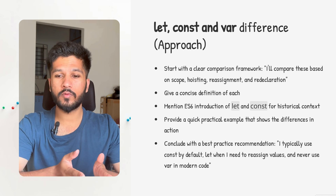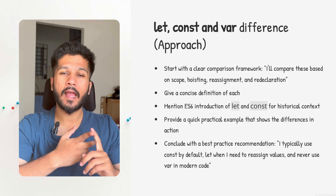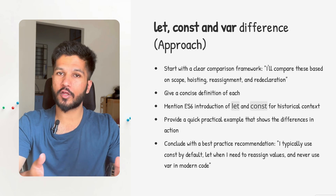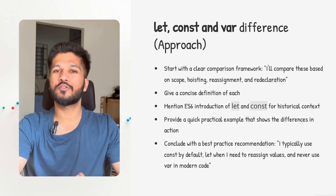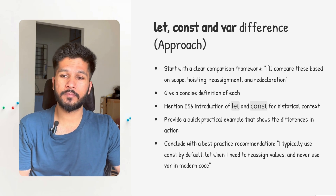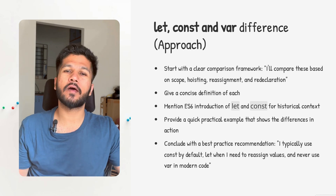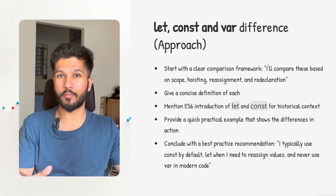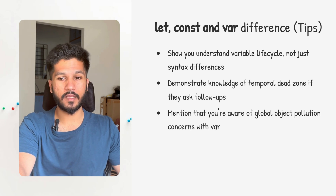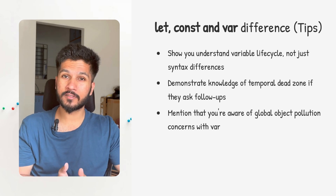Now let's talk about the approach. Start with a clear comparison framework: compare these based on scope, hoisting, reassignment and redeclaration. Give a concise definition of each. Mention the ES6 introduction of let and const for historical context. Provide a practical example showing the difference in action. Conclude with best practices: use const by default, let when you want to reassign a value, and avoid var entirely. Tips: show that you understand variable lifecycle, not just syntax differences. Demonstrate knowledge of the temporal dead zone and mention global object pollution that happens with var.